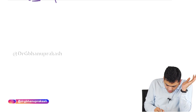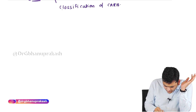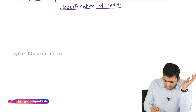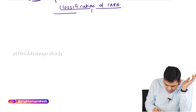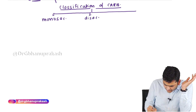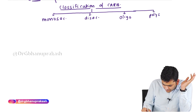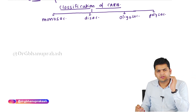Now let's see the classification of carbohydrate. The subcategories are: monosaccharide, disaccharide, oligosaccharide, and polysaccharide. These are the four subcategories we need to discuss.